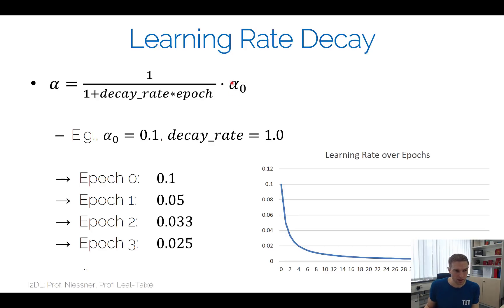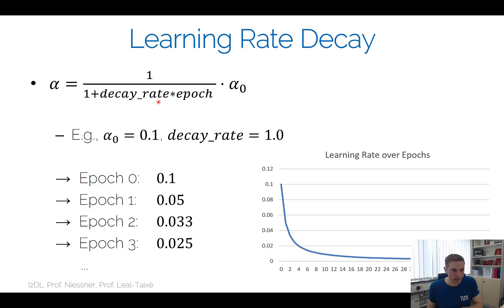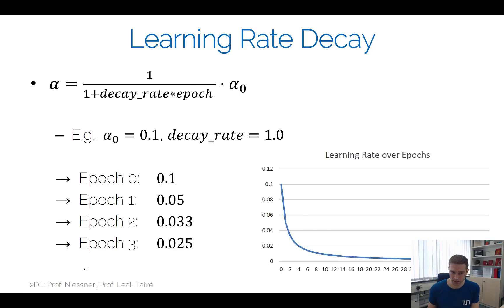As epochs increase, the denominator grows, making the learning rate smaller and smaller. For example, with decay rate 1.0 and alpha_0 = 0.1: epoch 0 gives 0.1, epoch 1 gives 0.05, epoch 2 gives 0.033, epoch 3 gives 0.025, and so on. The learning rate starts very high and decreases — this is a very common scenario. You start with high learning rate and go lower later.